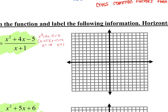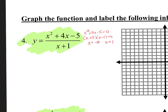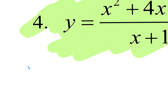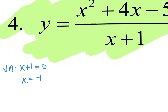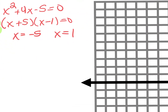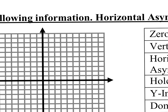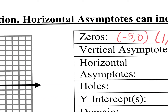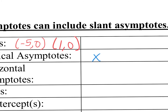Vertical asymptote — remind me how you find vertical asymptotes. Set the denominator equal to zero. So x plus 1 equals zero, which means your vertical asymptote is at x equals negative 1. Make sure you write x equals negative 1.